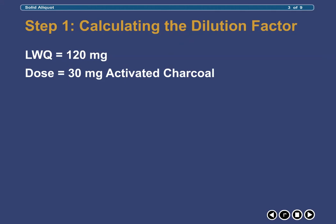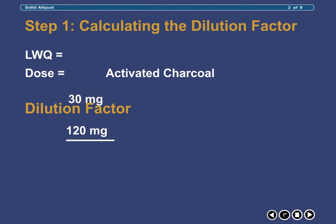Knowing these two things allows us to calculate a dilution factor. The dilution factor can be calculated by dividing what we can weigh, which is our least weighable quantity, by what we wish to weigh, which in this case is 30 mg. By performing this simple calculation, we obtain a dilution factor of 4.